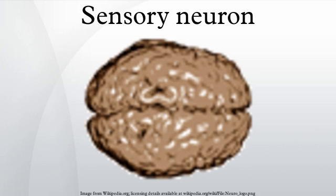Sensory neurons are nerve cells that transmit sensory information. They are activated by sensory input, and send projections to other elements of the nervous system, ultimately conveying sensory information to the brain or spinal cord.